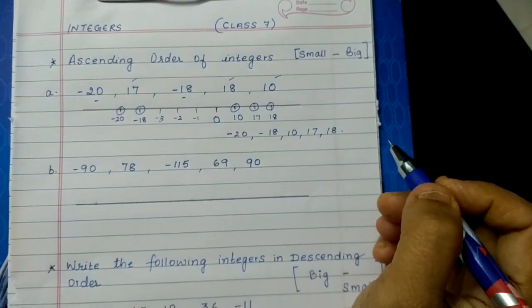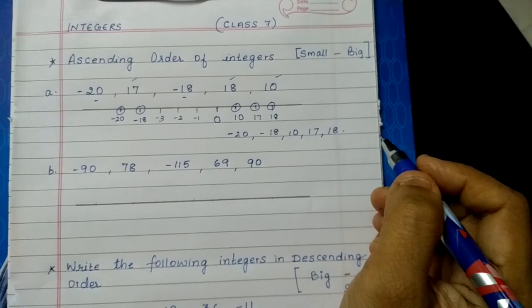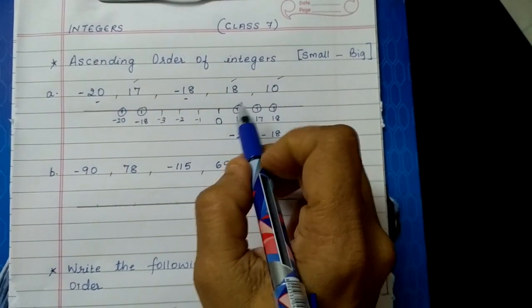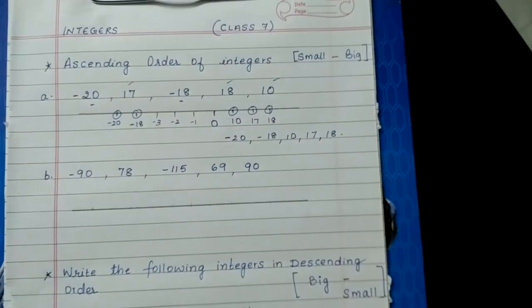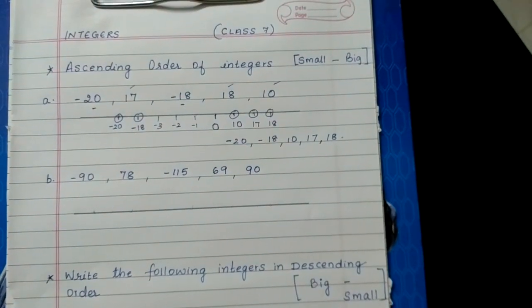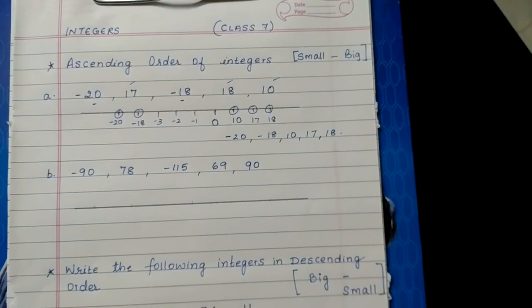You saw children how simple it is once you know where the positive and negative numbers have to be placed on the number line.